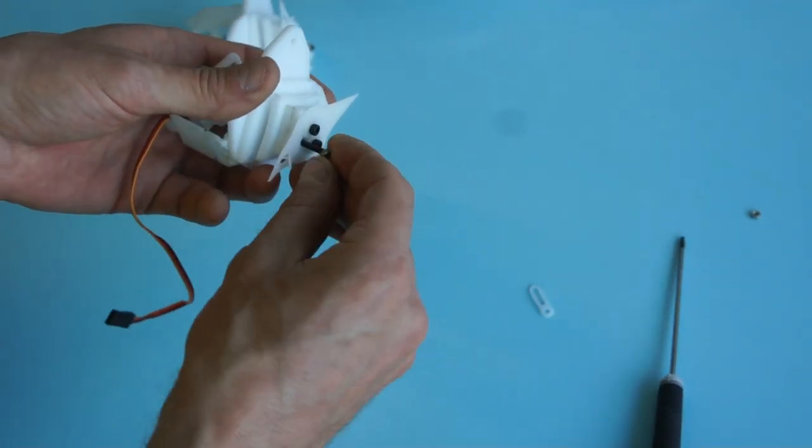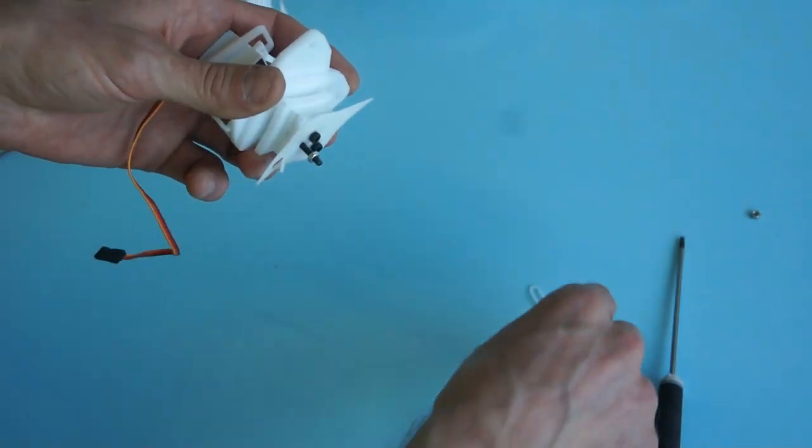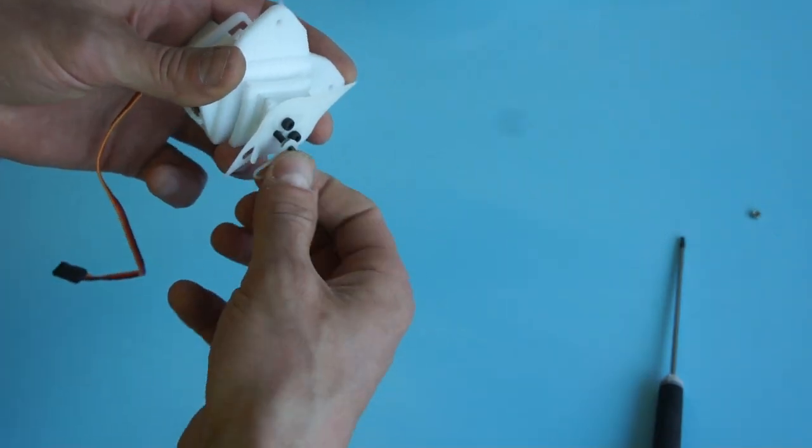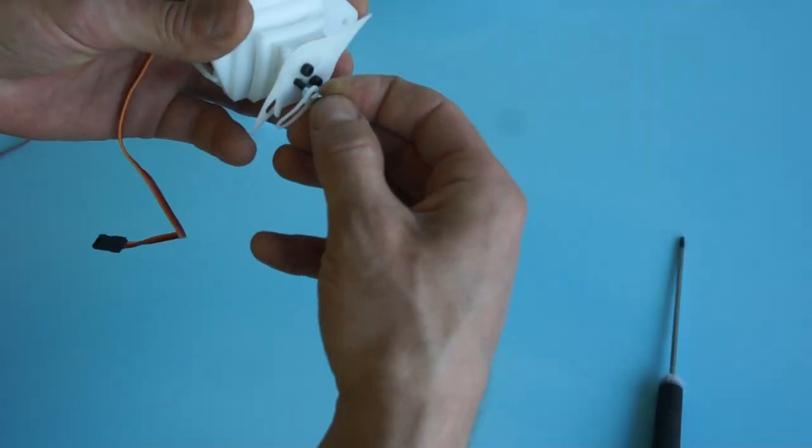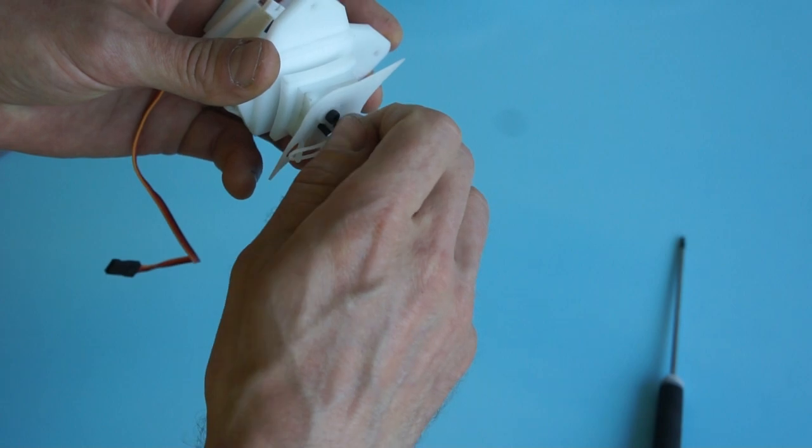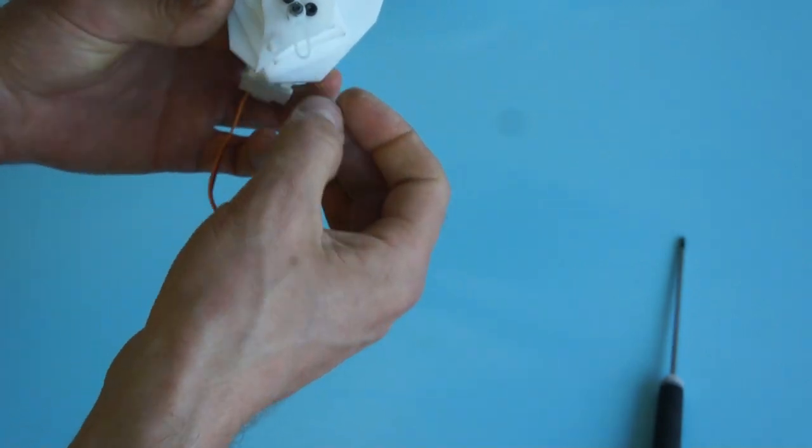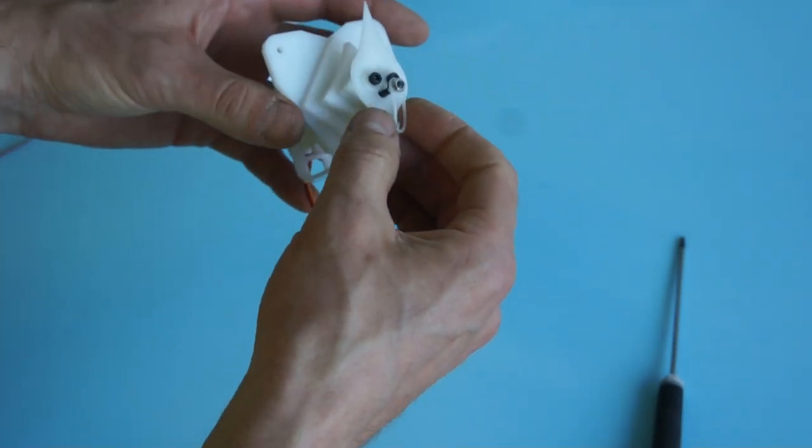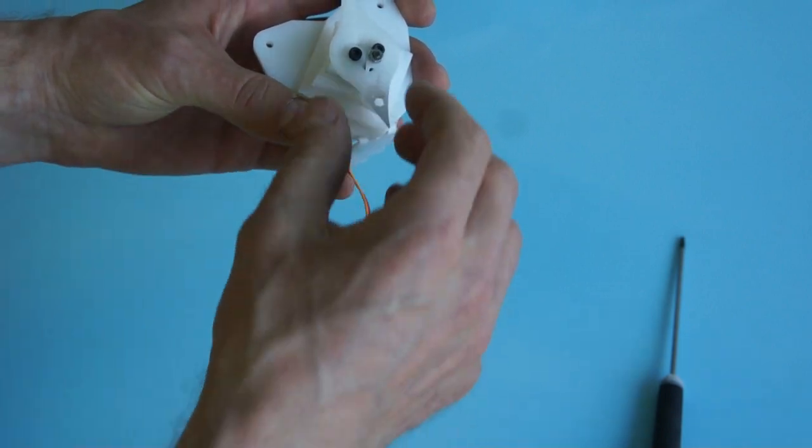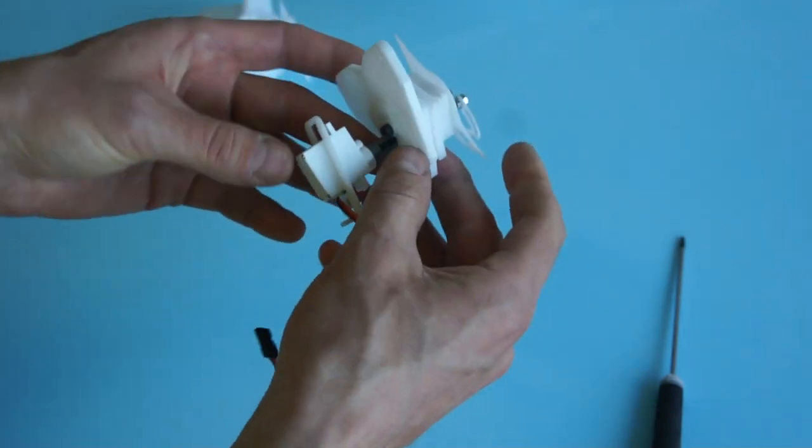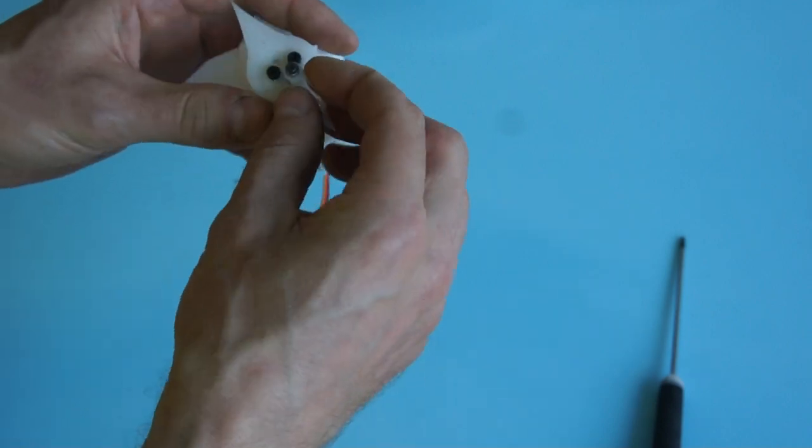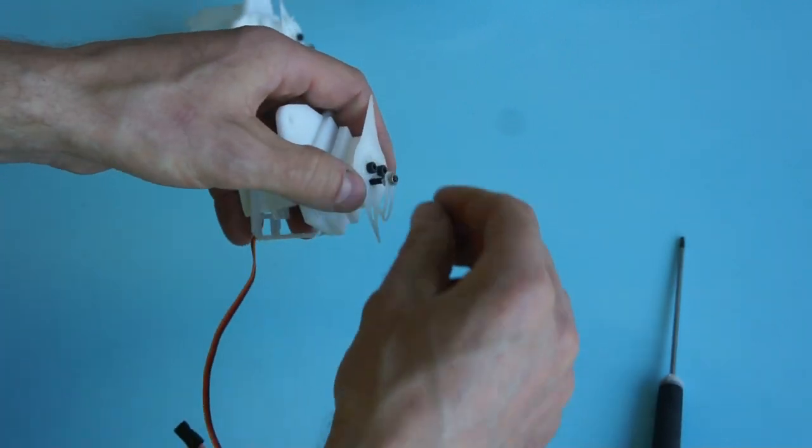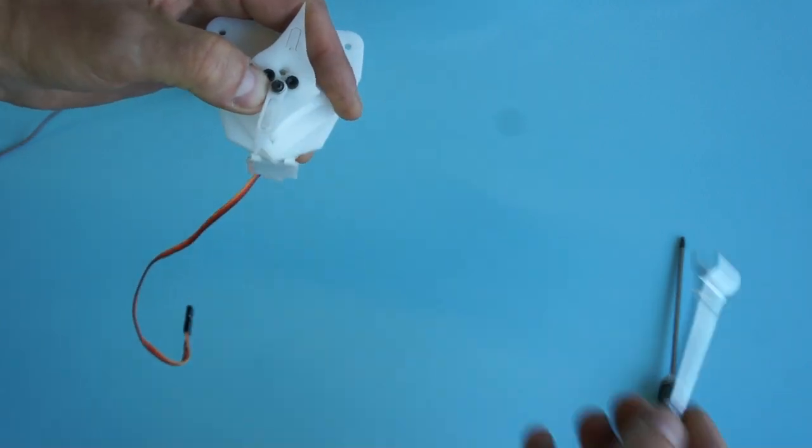Put the top, the bottom nut, and then we're gonna counter screw these two nuts, so they tighten against each other. This is the principle for adjusting where this is sitting, and then you can use the software to set it in the middle position when you initialize your servos. They should all sit in the middle position, and then you can counter tighten these using a key.